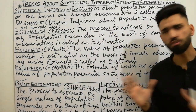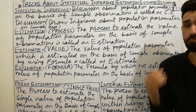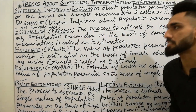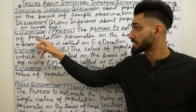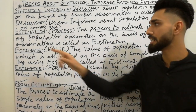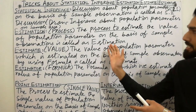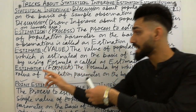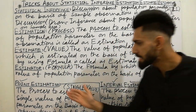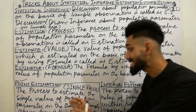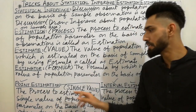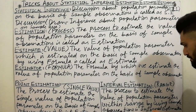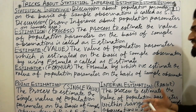I hope you gained a lot of points and concepts. Let me repeat the steps: statistical inference is the discussion about population parameter on sample basis. Estimation is a process. Estimate is a value. Estimator is a formula. Point estimation uses a single value. Interval estimation uses a range — the process within a range. That's called as interval estimation.